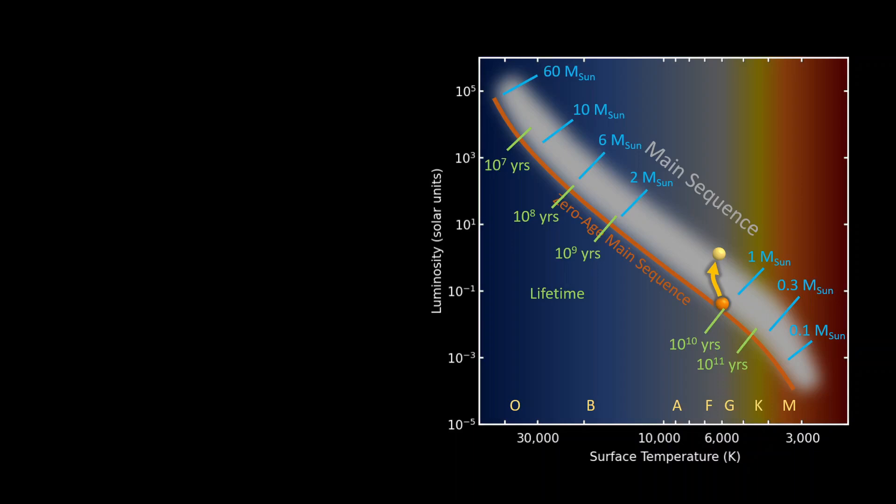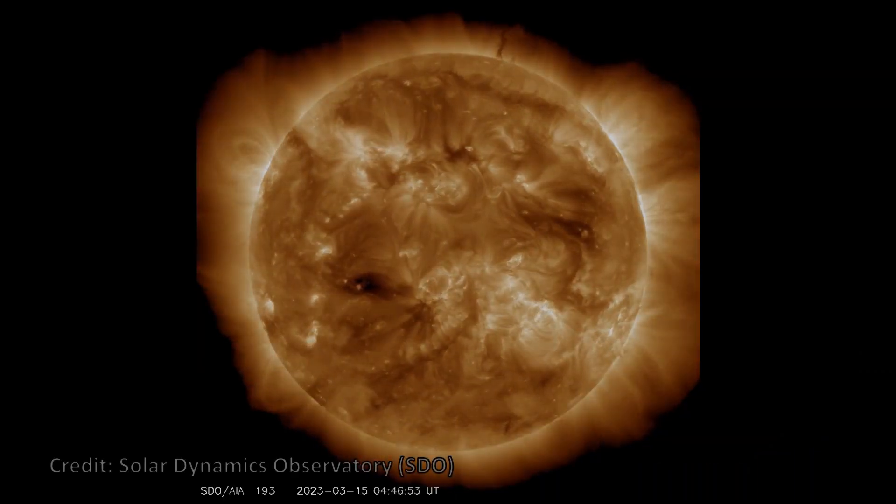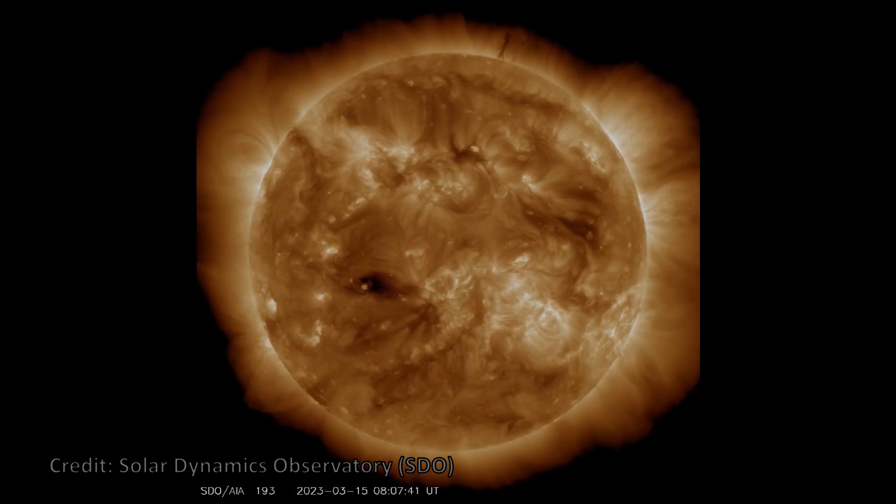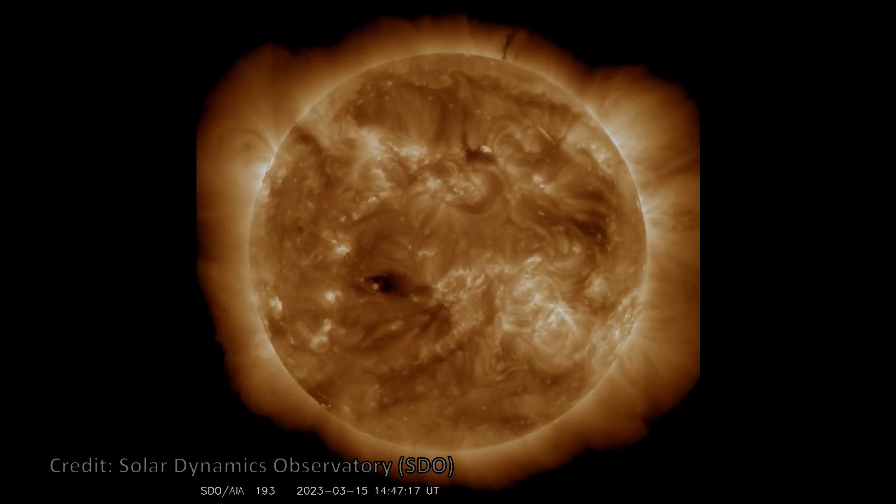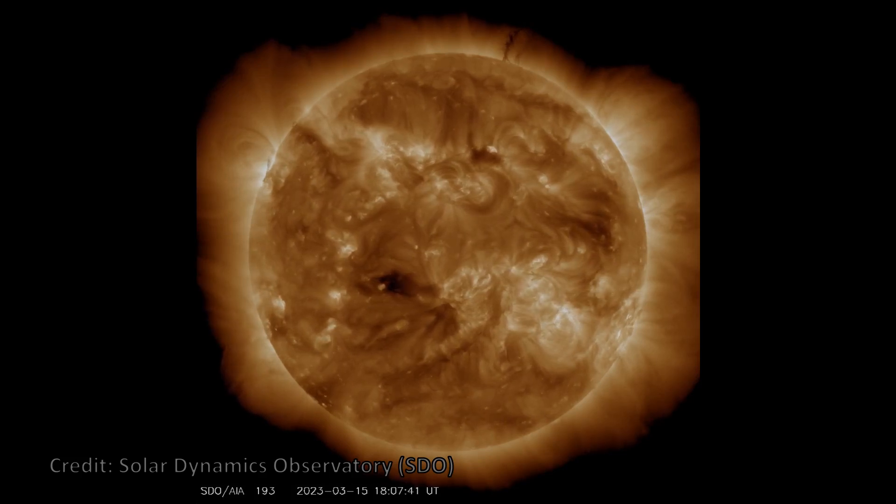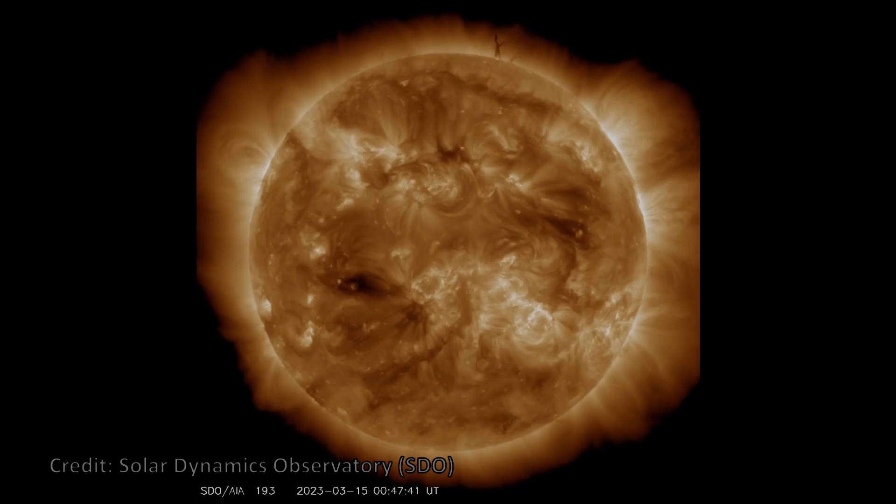The diagram shows the dependence of the main sequence lifetimes on spectral type and mass of the star. Our Sun is a G2 star with a lifetime of approximately 9 billion years. Because it formed approximately 4.5 billion years ago, the Sun is expected to stay in the main sequence another 4.5 billion years.